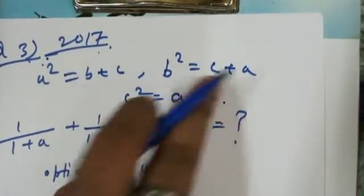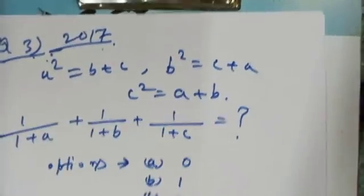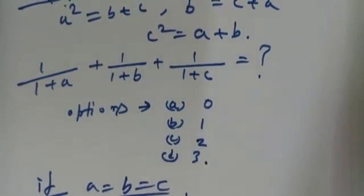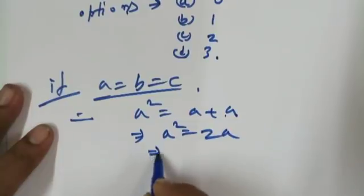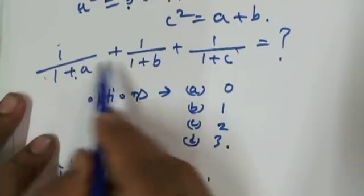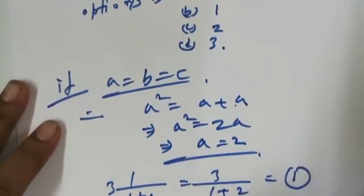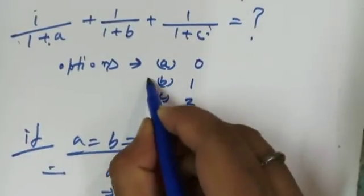From the given data, A², B², C² are all the same symmetric type. So put A = B = C. Then A² = A + A = 2A, giving A = 2. The expression becomes 3 × 1/(1+A) = 3/(1+2) = 3/3 = 1. So option B (value = 1) is the correct option.